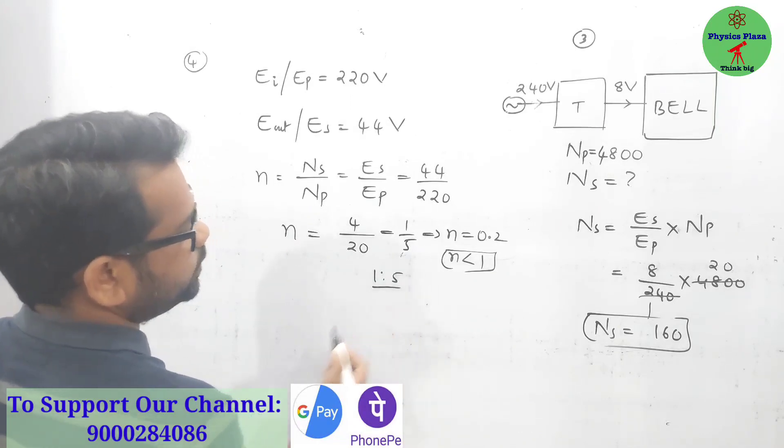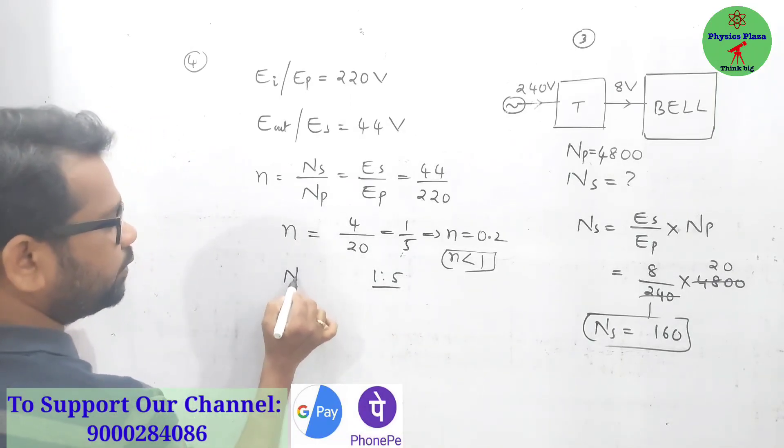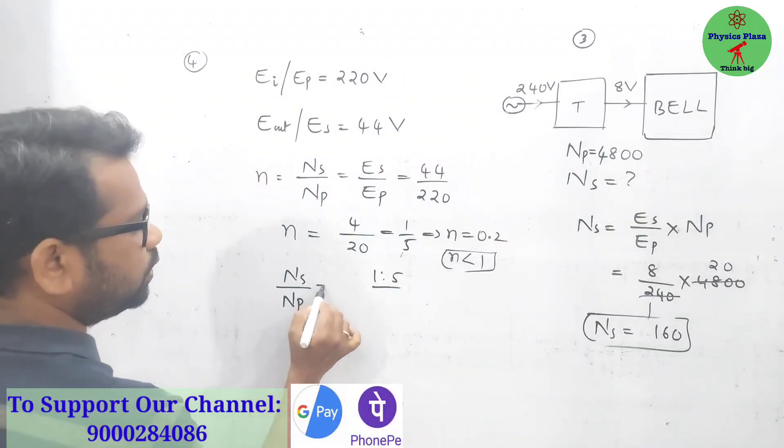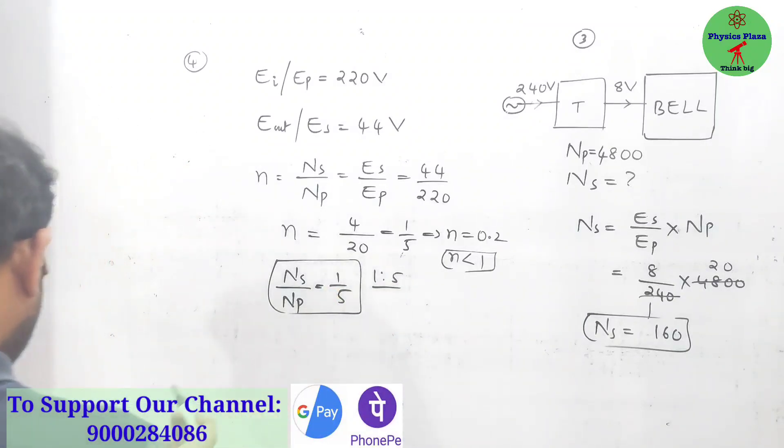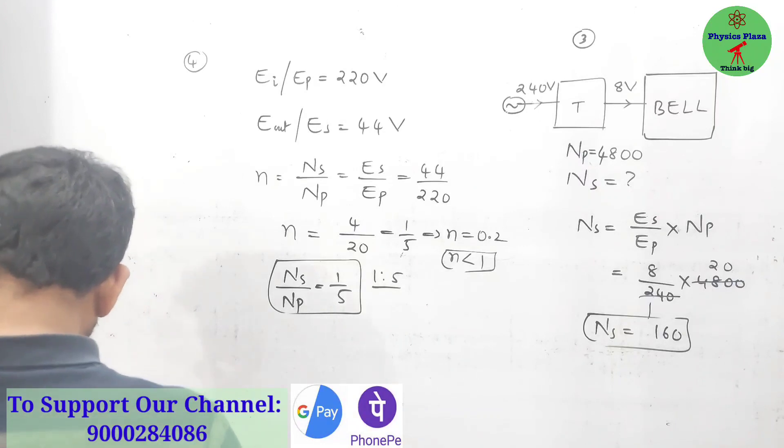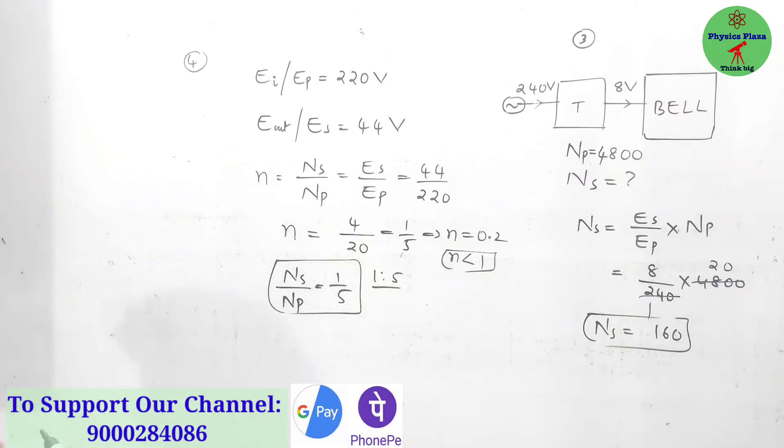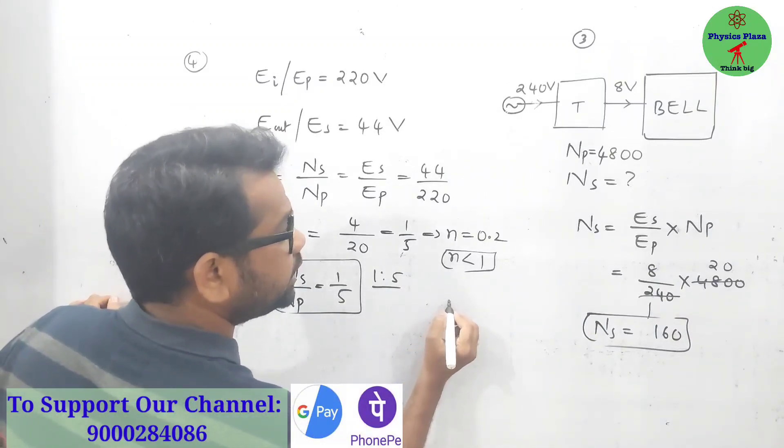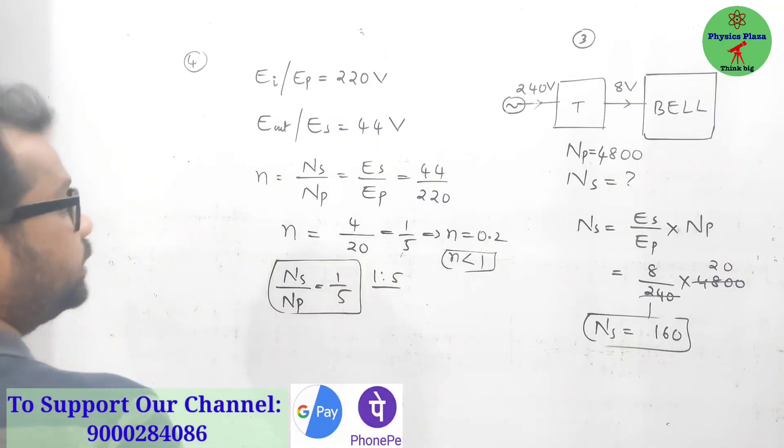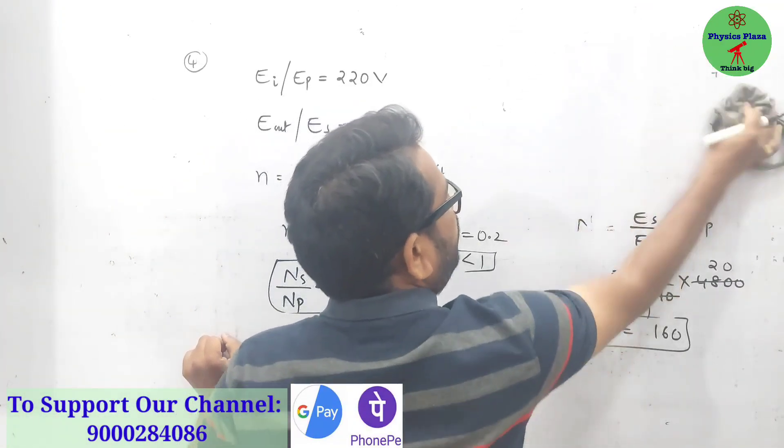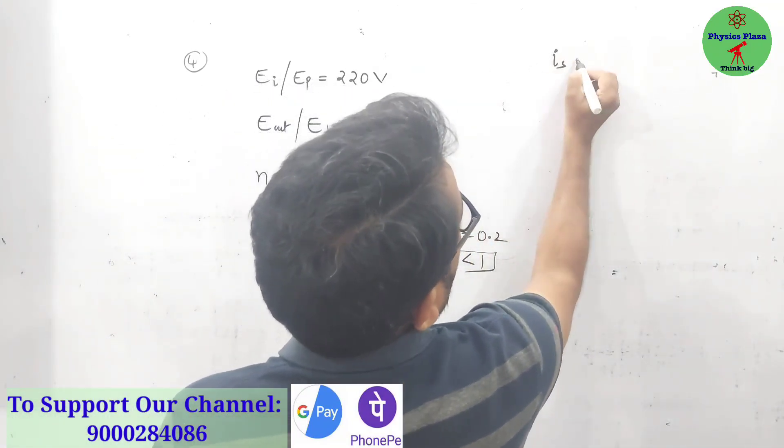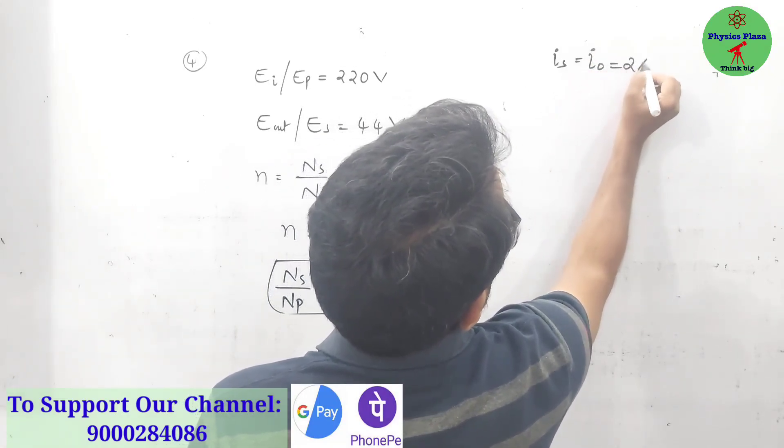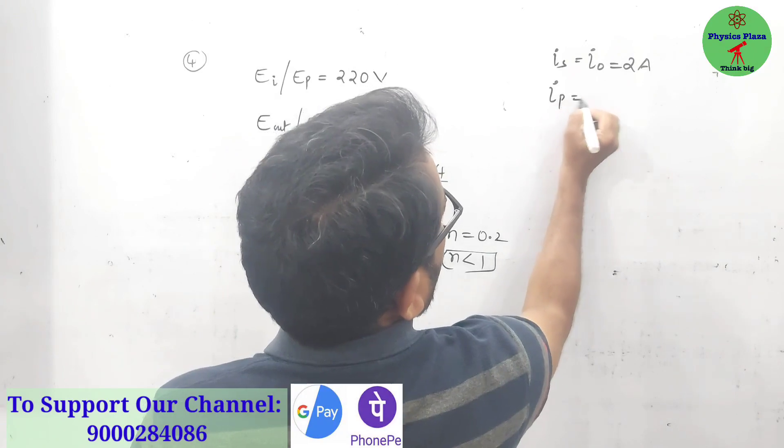The second part, they're asking us to calculate the ratio of current. They're asking the input current if the output current is 2 amperes. Output current is given, they're asking us to calculate the input current. So output current, that is current in the secondary coil, is given as 2 ampere. Then they are asking us to calculate current in the primary coil or input current.